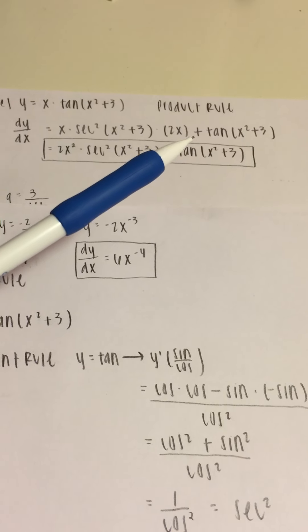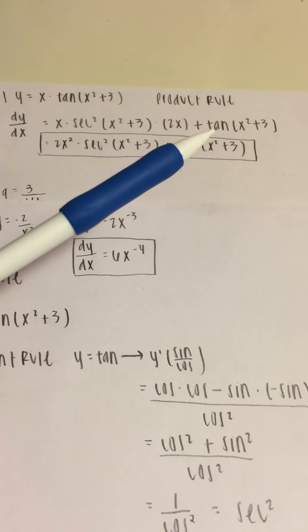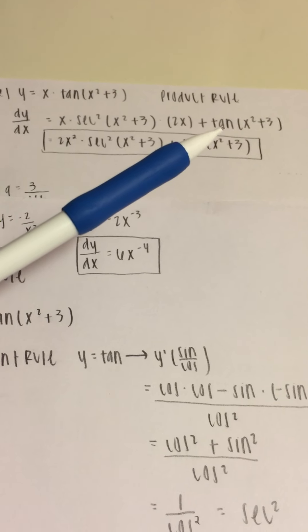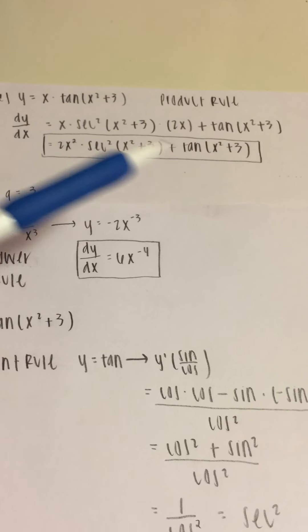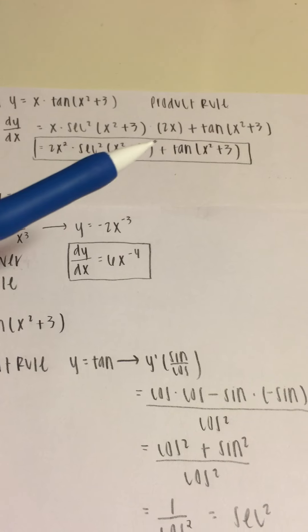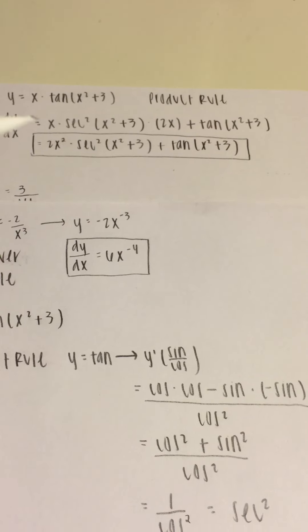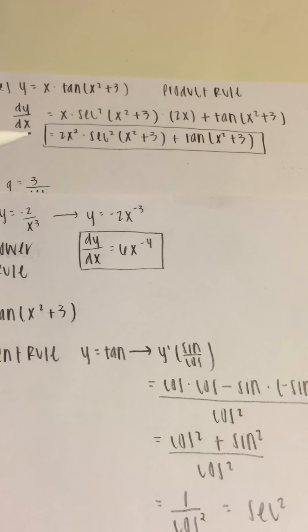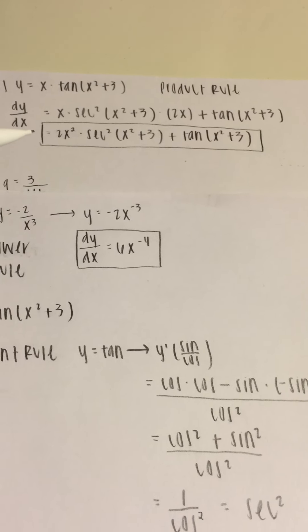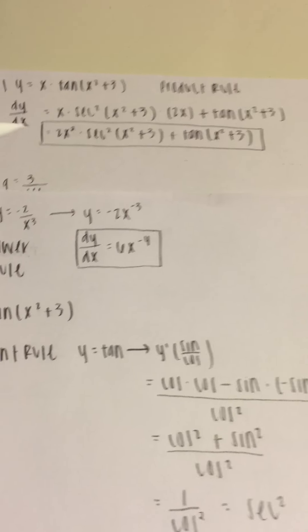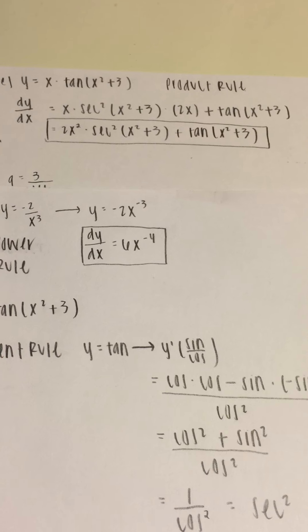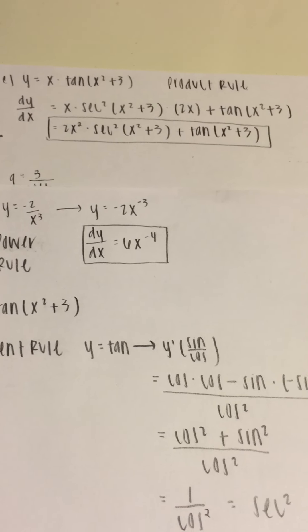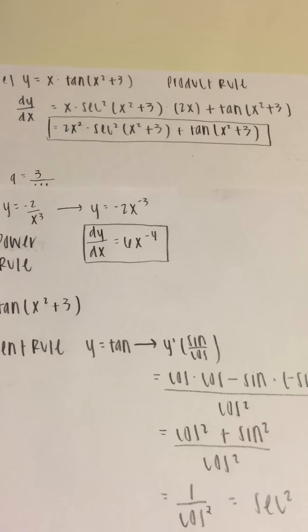Adding the second part, we have tangent of x squared plus 3 times the derivative of x, which is 1. Combining, the answer is 2x squared times secant squared of x squared plus 3, plus tangent of x squared plus 3.